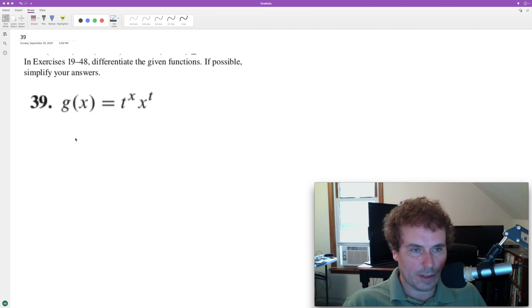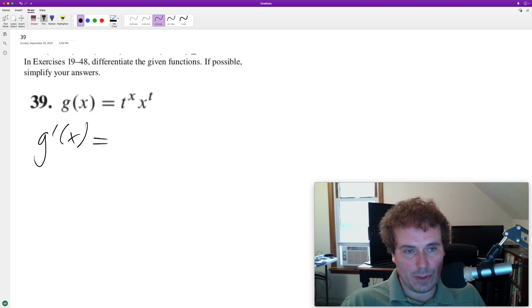Taking the derivative of the following problem. We're going to use the product rule. So g prime of x is going to equal the derivative of the first part, but here's the thing you got to be careful about: this is with respect to x.